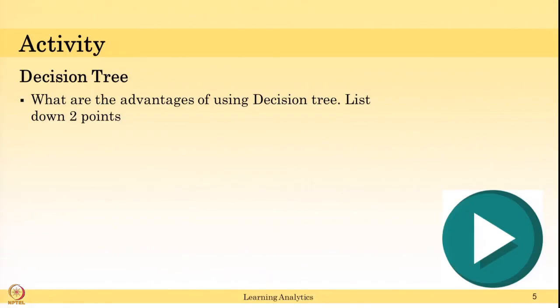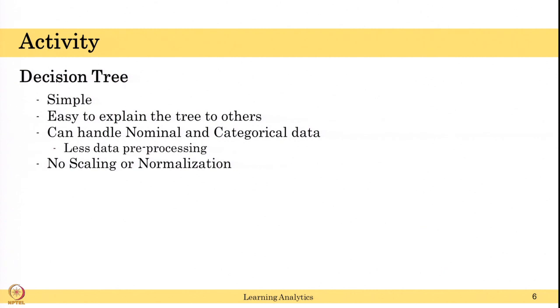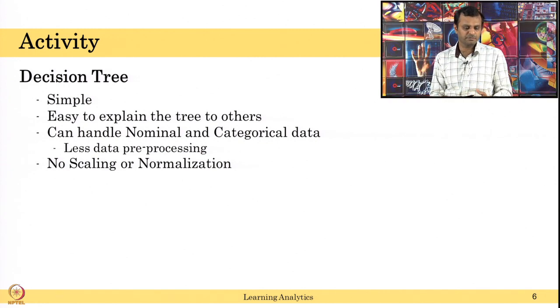Let us see that in the next video. But before that, can you list down the advantages of using decision tree? Can you list down one or two advantages compared to other algorithms you have seen in this course? Decision tree is simple and easy to explain to others because I said this is how humans make decisions. We can easily explain to others, they can relate to daily decision making.